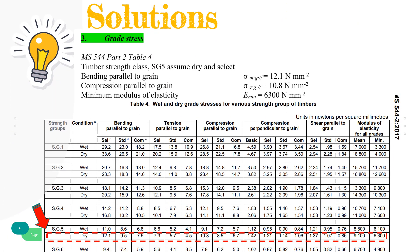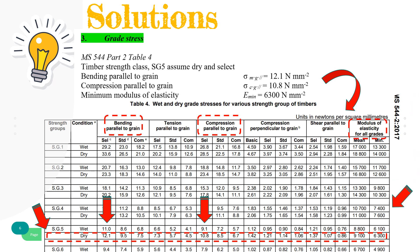Grade stresses for timber strength class SG5, assuming dry and select grade, are referred to Malaysian Standard Table 4. The values are: bending parallel to grain equals 12.1 N/mm², compression parallel to grain equals 10.8 N/mm², and minimum modulus of elasticity equals 6300 N/mm².